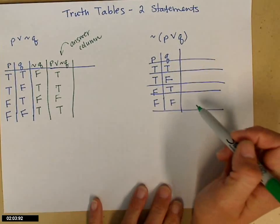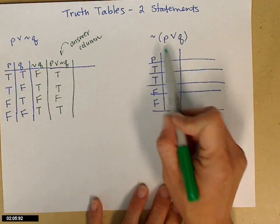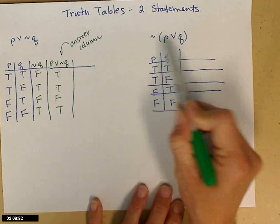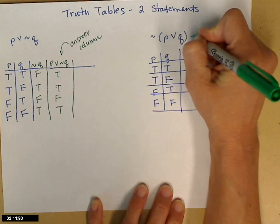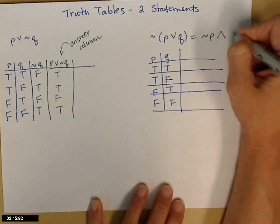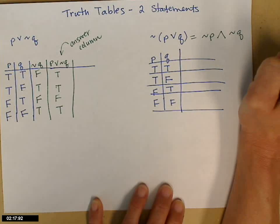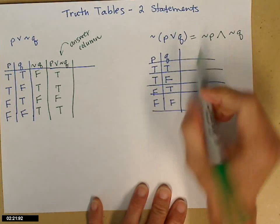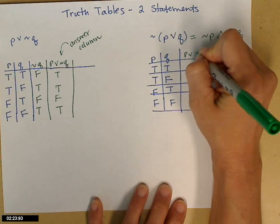There are a couple of ways you could go about this one. You could use DeMorgan's law and carry the not through. Remember when the not goes through, that changes to a not P and not Q. But I think this might be the easiest way to do it here. So the first thing I'll get is P or Q.